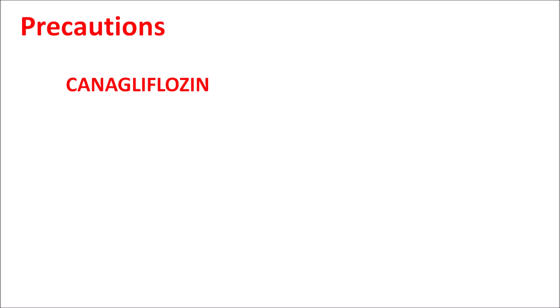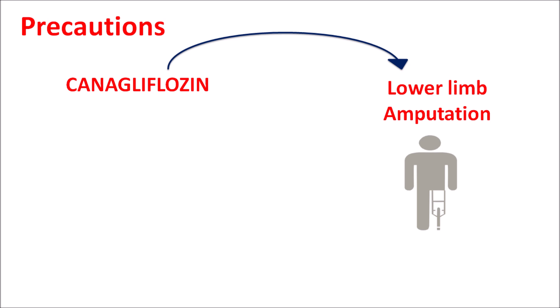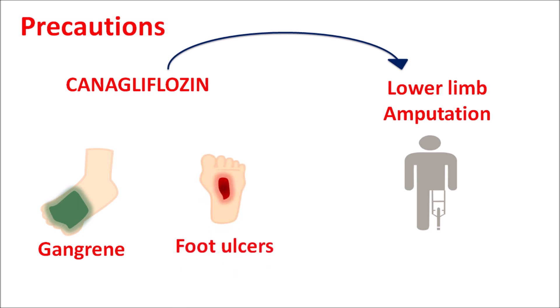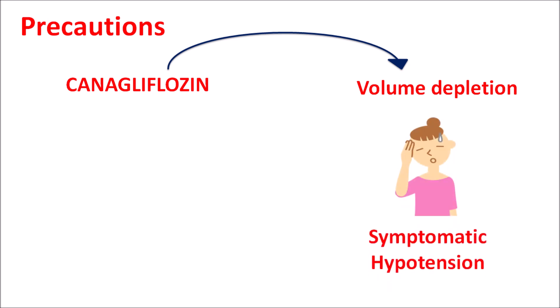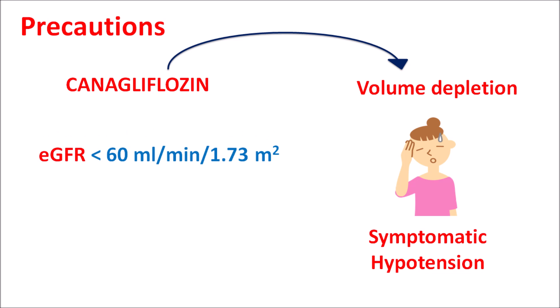One important precaution is that canagliflozin can cause lower limb amputations due to increased infections at the lower limb. This drug may increase the risk of gangrene and diabetic foot ulcers, so amputations may be possible, particularly at higher doses such as 300 mg once daily. Patients with a previous history of amputations or lower limb infections should be carefully monitored. Additionally, this drug can produce volume depletion resulting in symptomatic hypotension, which is more pronounced in patients with renal dysfunction where eGFR is less than 60 mL/min.